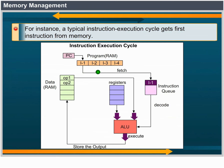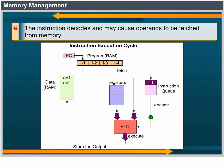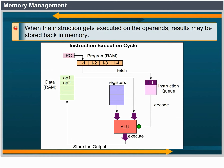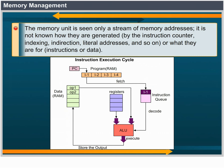A typical instruction execution cycle first fetches an instruction from memory. The instruction is then decoded and may cause operands to be fetched from memory. After the instruction has been executed on the operands, results may be stored back in memory. The memory unit sees only a stream of memory addresses. It does not know how they are generated — by the instruction counter, indexing, indirection, literal addresses and so on — or what they are for, whether instructions or data.